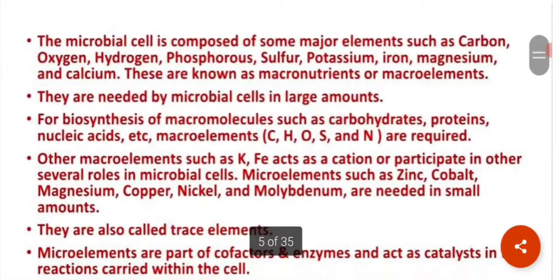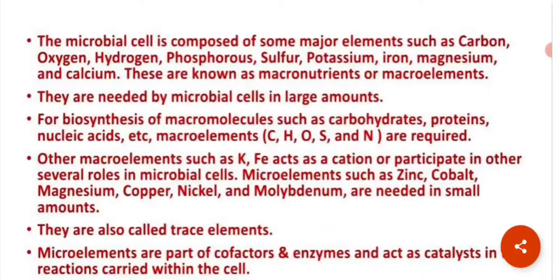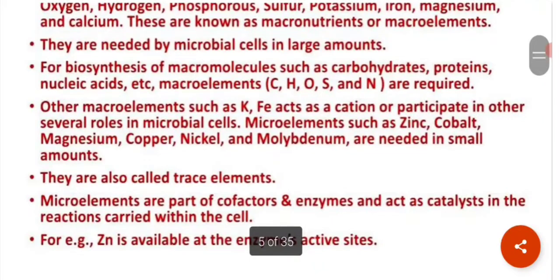Microbial cells are composed of major elements. The major elements include carbon, oxygen, hydrogen, phosphorus, sulfur, potassium, iron, magnesium, and calcium — these are needed in high amounts and are therefore called macronutrients. They are needed in large amounts for the biosynthesis of macromolecules such as carbohydrates, proteins, and nucleic acids.